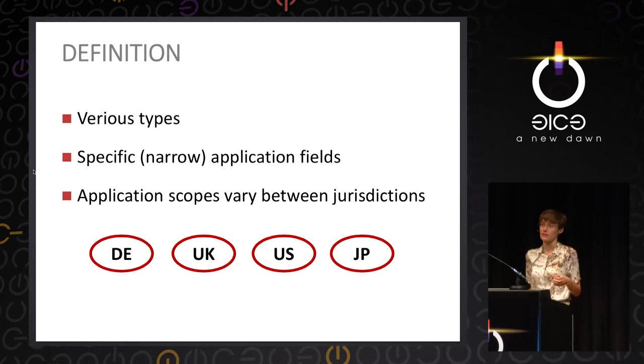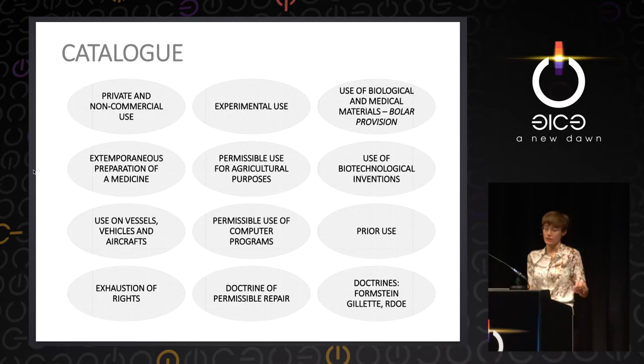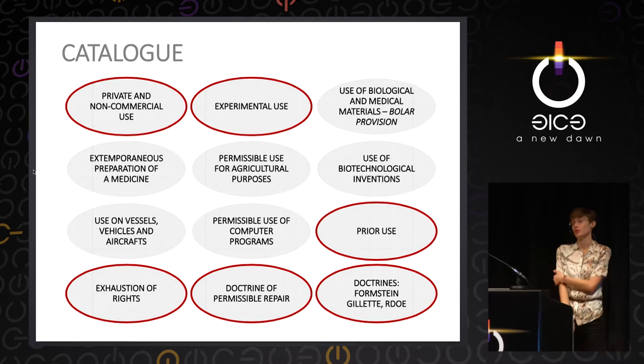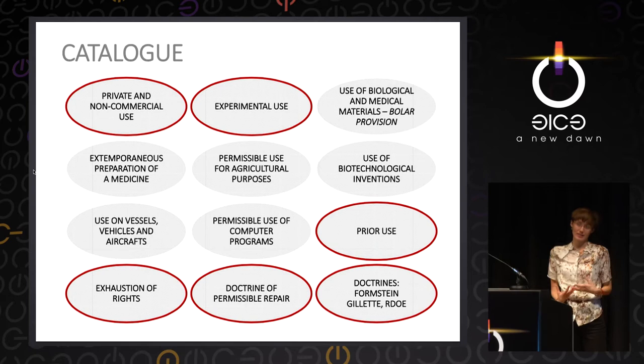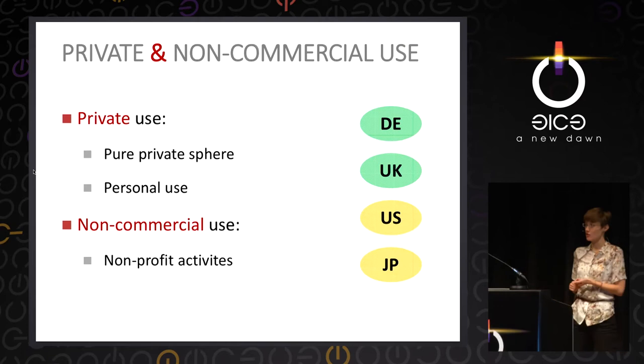The catalogue looks pretty fine because there are various tools, but my analysis led to the conclusion that only a few would apply in a making scenario. None of these tools will support making 100%. You have to adjust your making to these exceptions to feel safe and free. The first one is private and non-commercial use. This is a statutory limitation in the United Kingdom and Germany. I haven't found much about private and non-commercial use in the United States — only in terms of repair, which I will talk about shortly.